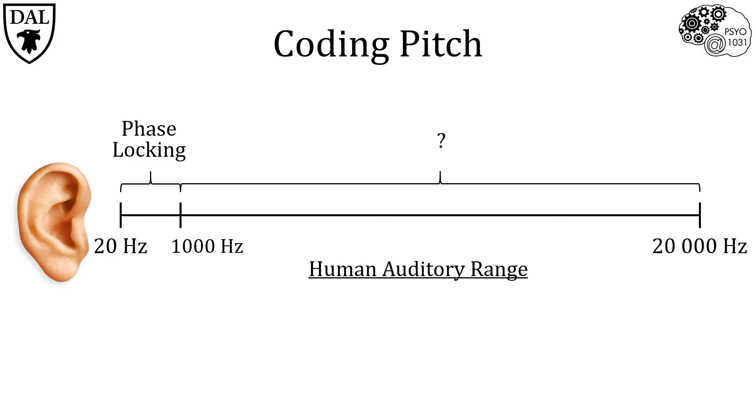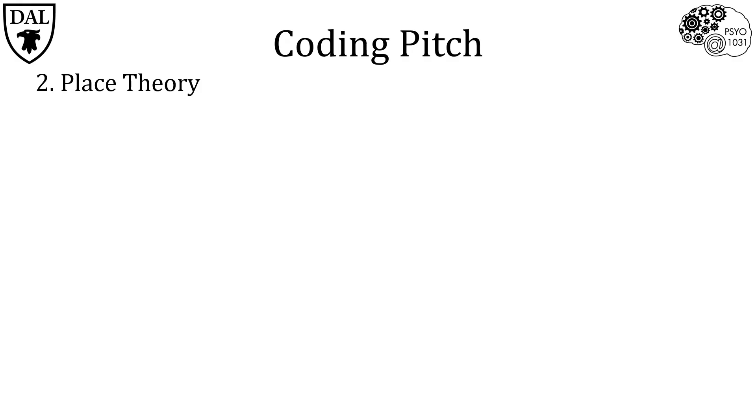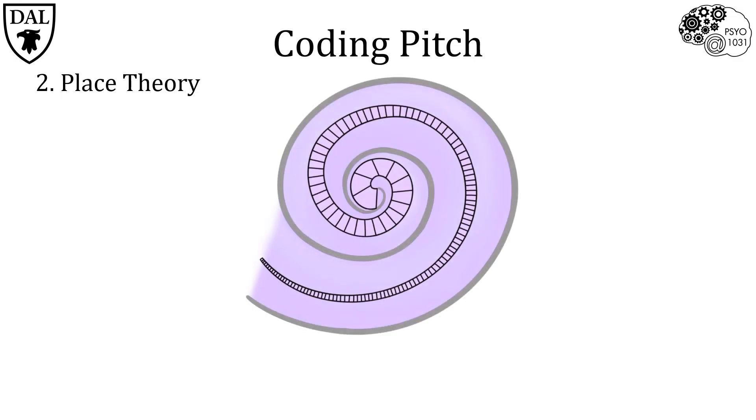So, what mechanisms enable the sensing of wavelengths with frequencies greater than a thousand Hertz? This is where the second theory comes in: place theory. Sound waves entering the cochlea will reach a peak in basilar membrane movement at different distances from the oval window. This distance is dependent on the frequency of the sound wave. This is because the properties of the basilar membrane vary along its length.